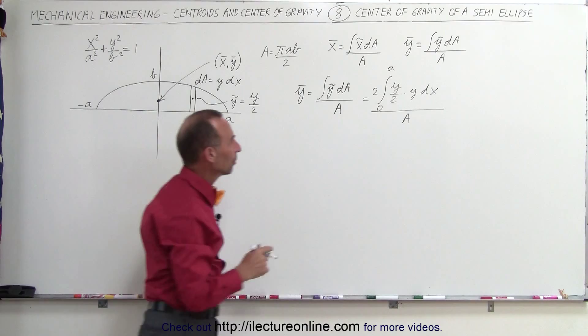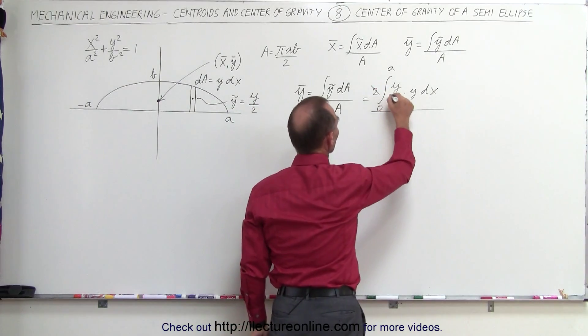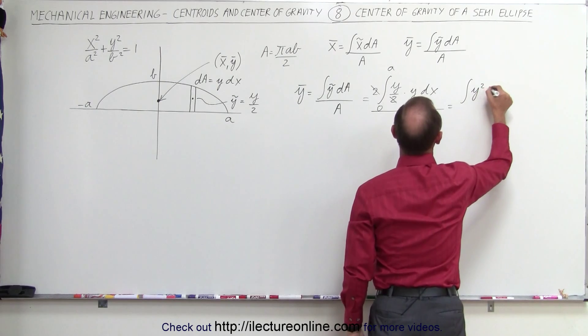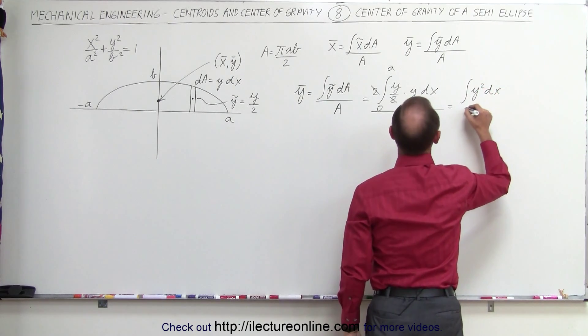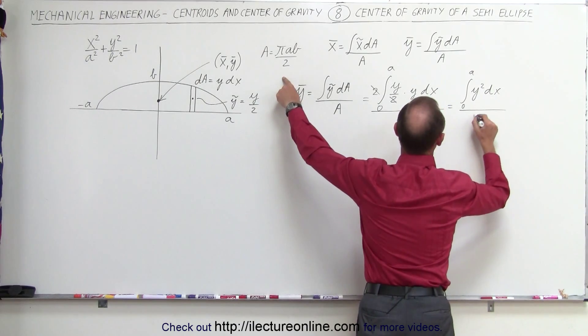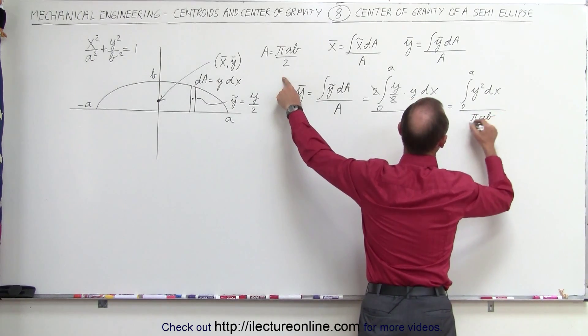And the whole thing divided by the area of that semi-ellipse. Plugging in the numbers, we have 2 divided by 2, that cancels out. This is equal to the integral of y² dx going from 0 to A divided by the area, which would be πAB divided by 2.